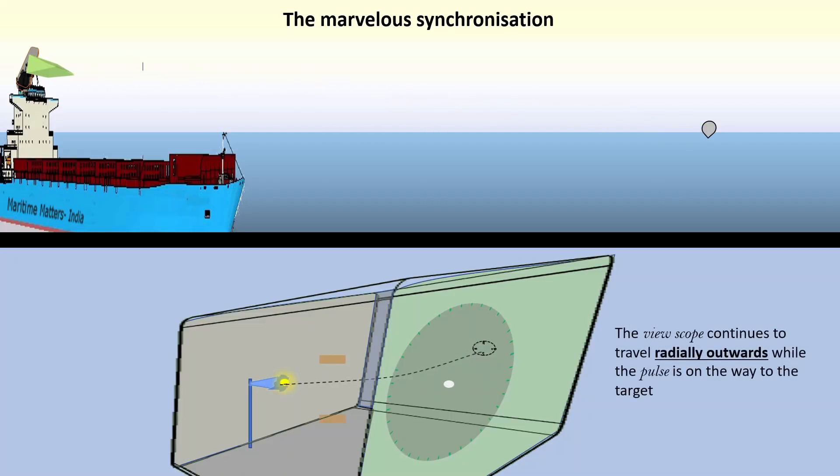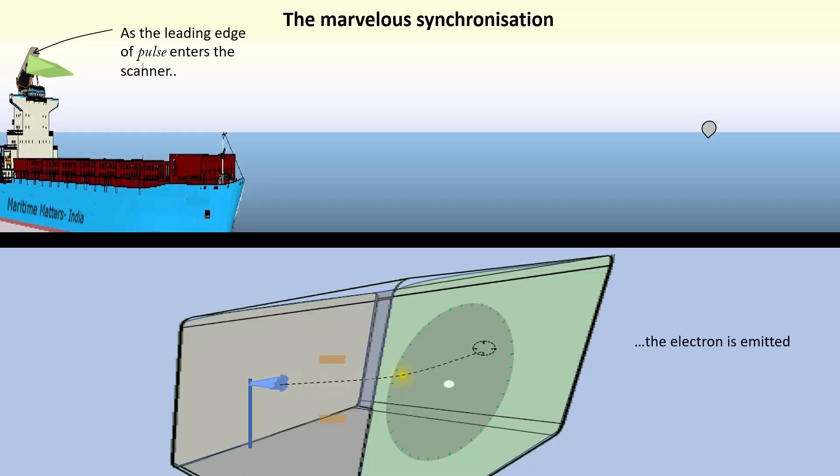The viewscope continues to travel radially outwards while the pulse is on the way to the target. As the leading edge of the pulse enters the scanner, the electron is emitted.